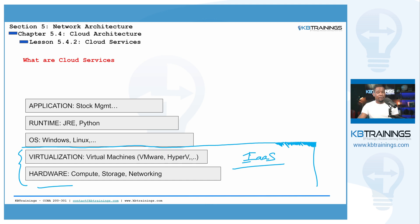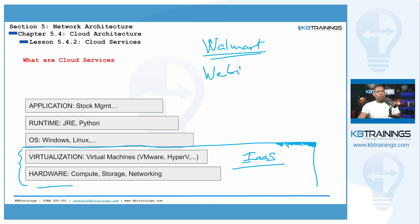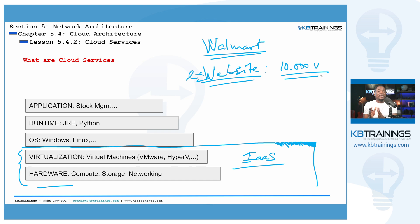With IaaS, the provider takes care of all the underlying things — the hardware and the virtualization. You don't care about that; they do it for you. You just start installing your system and running it. One of the main advantages is that this is very scalable. For example, let's say you are a big company like Walmart — a big retail store with an e-commerce website — prepared to handle 10,000 visitors at the same time.